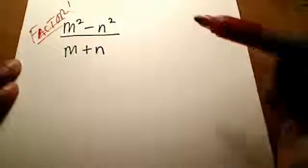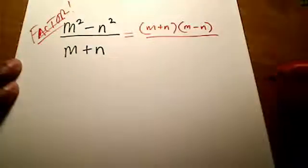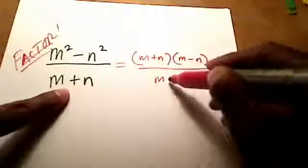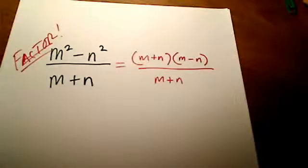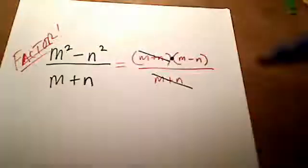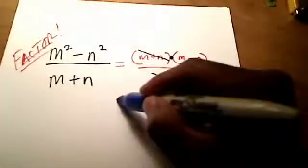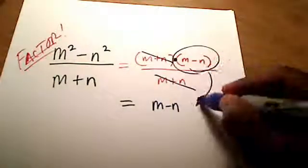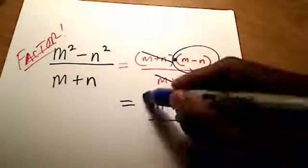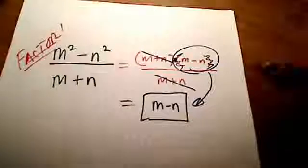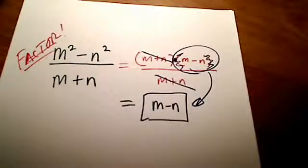That is a difference of squares, and a difference of squares can be factored where the two parentheses look exactly the same except the signs in the middle are different: (m plus n)(m minus n). We still have m plus n on the bottom. Now this is stuff times stuff — that's multiplication — which is what allows me to cross out the m plus n's, and I'm left with just m minus n. You can write the answer with or without parentheses; since there's nothing else going on, we just write m minus n.